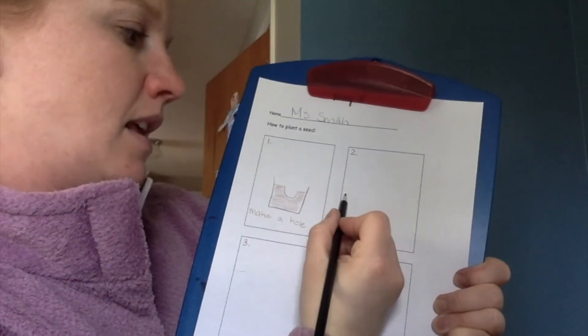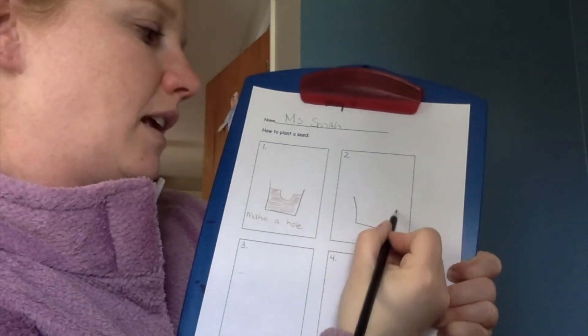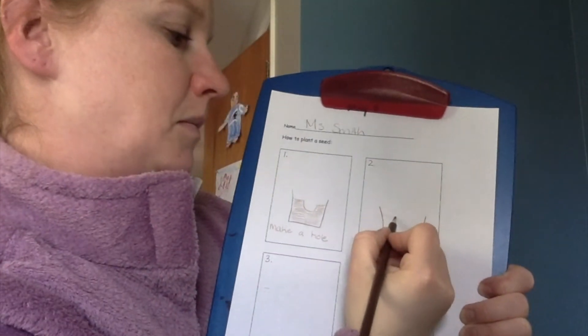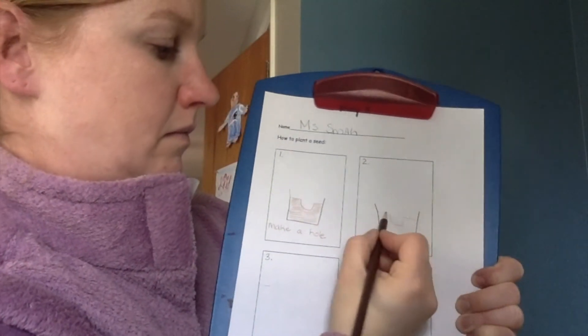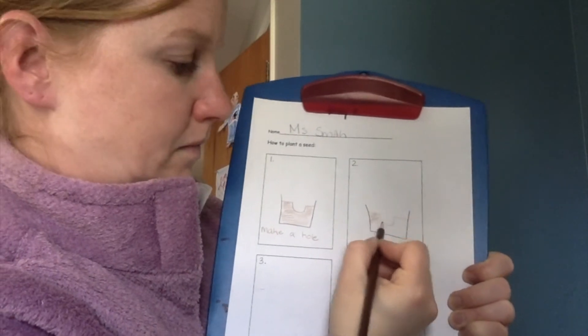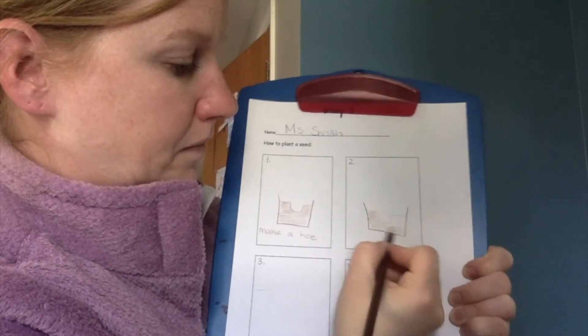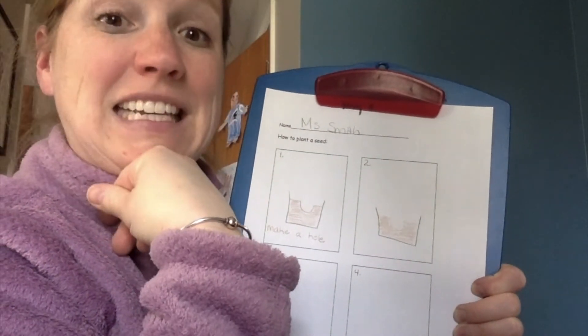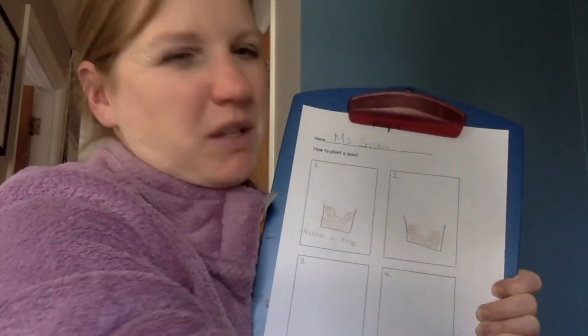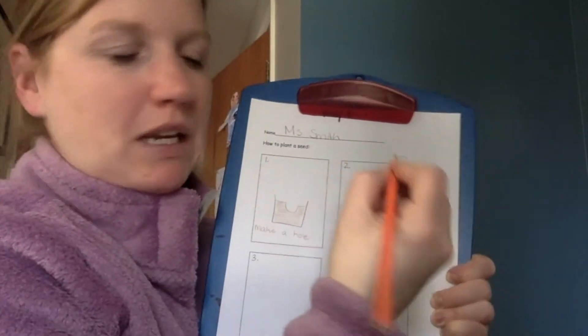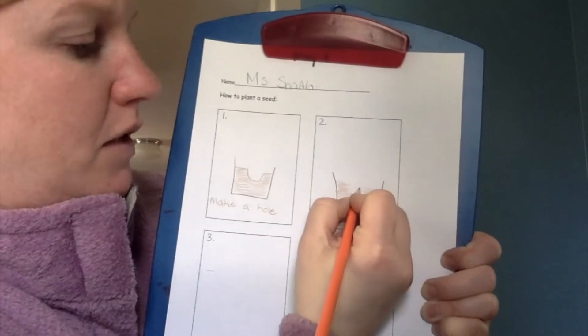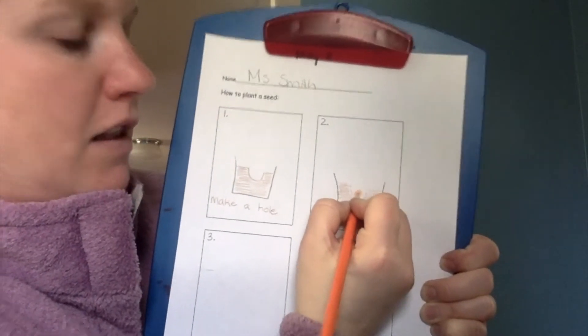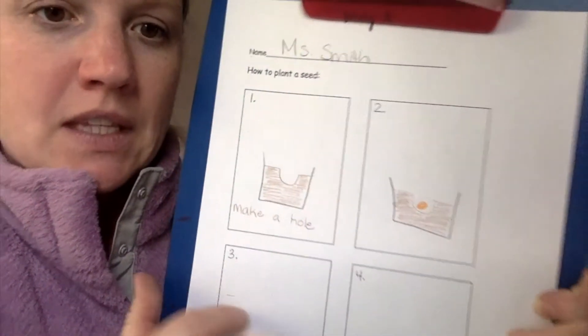After we made the hole, here's our flower pot again. And here's my hole. Remember what we did next? We had a hole. What did we put in the hole? Seed. Right. These were white but you won't really be able to see that if you draw it. So I'm going to make an orange seed here just so we can see it. So here's the seed in the hole. You see it there?